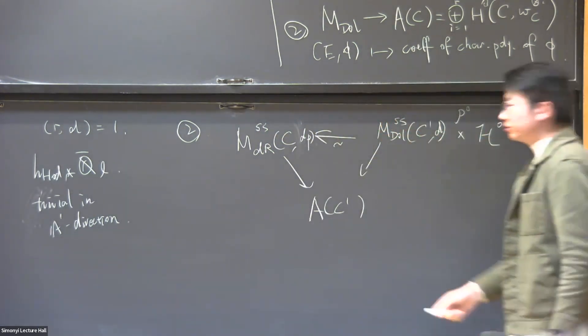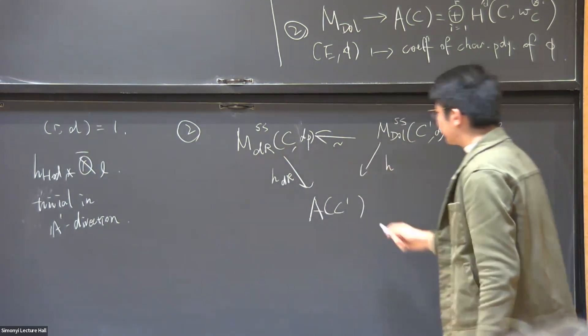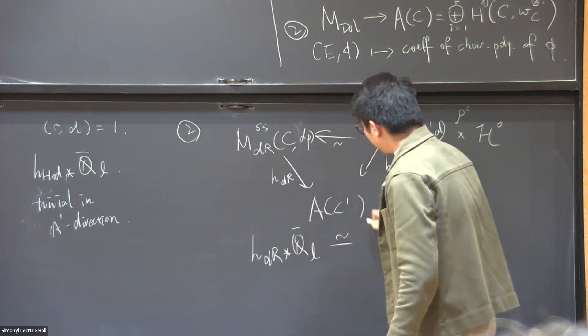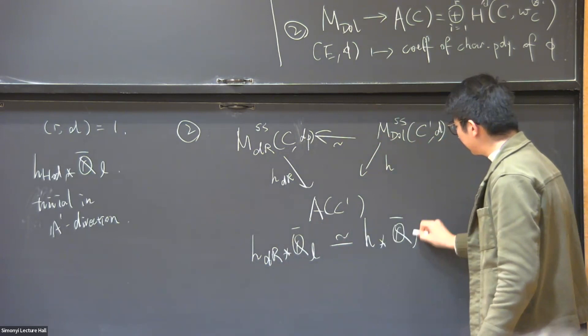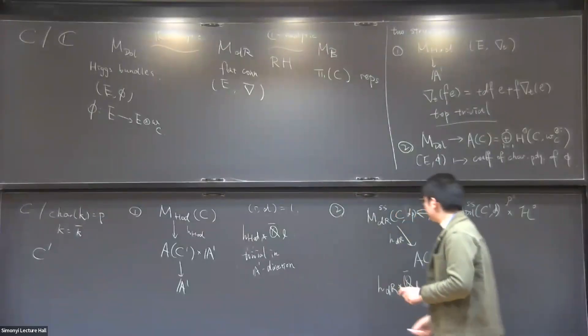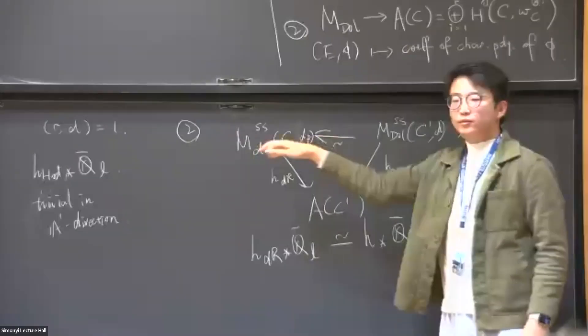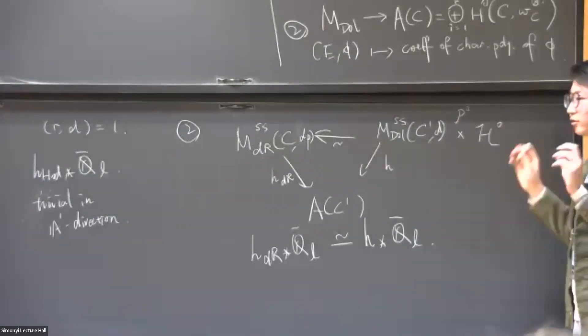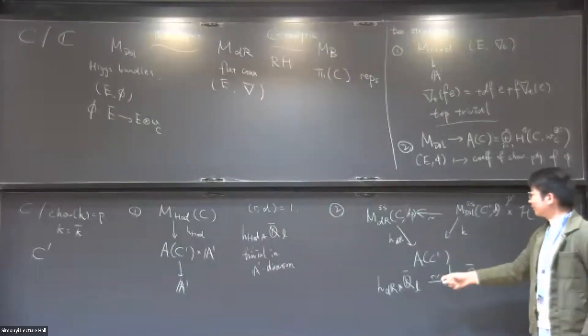If I call this the de Rham-Hitchin morphism and the Hitchin morphism, then we can deduce another isomorphism. The de Rham-Hitchin pushforward is isomorphic to the Hitchin pushforward, same curve, same degree, but here it's for different curve and degree multiplied by p. So bootstrapping from those two cohomology isomorphisms we can deduce some, the so-called degree independence results, saying that the cohomology of the moduli space is independent from the degree.